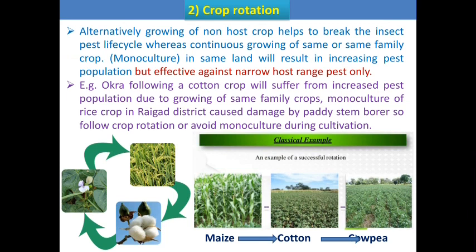One disadvantage of crop rotation is that it is only effective against pests with a narrow host range. In case of a wide host range, this technique is not very effective. Pests are categorized as monophagous, oligophagous, and polyphagous. Monophagous and oligophagous pests have a narrow host range, so crop rotation is effective. But for polyphagous pests with a wide host range, this technique is not very effective because they have a number of hosts.